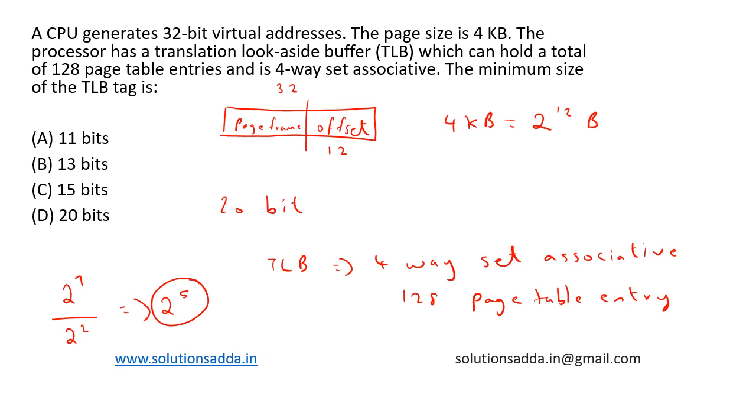And the remaining 20 minus 5, 15 bits, is required to find the TLB tag bit. So this 20 bit is again split into 15 bits and 5 bits. The question asked here is what is the minimum size of the TLB tag. It is 15 bits, so the correct option here is option C, 15 bits.